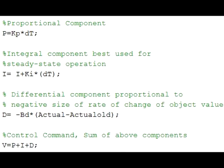There's a lot of writing here, but most are just comments. We have four simple equations. The first defines P as Kp times the error dT. P gets larger as dT gets larger. Kp defines the rate that P increases with a given error.